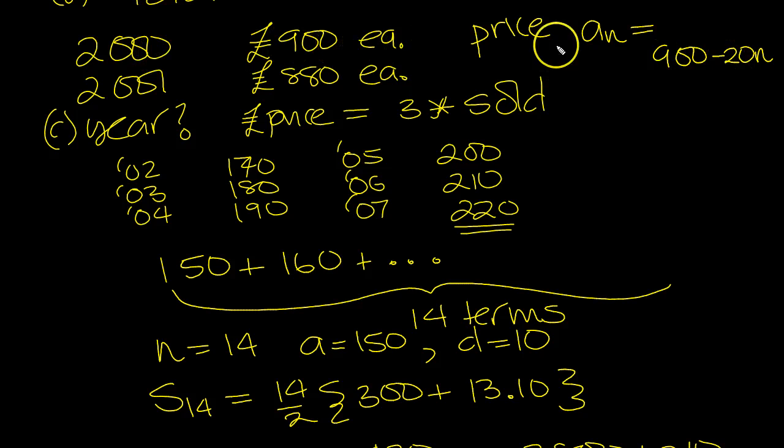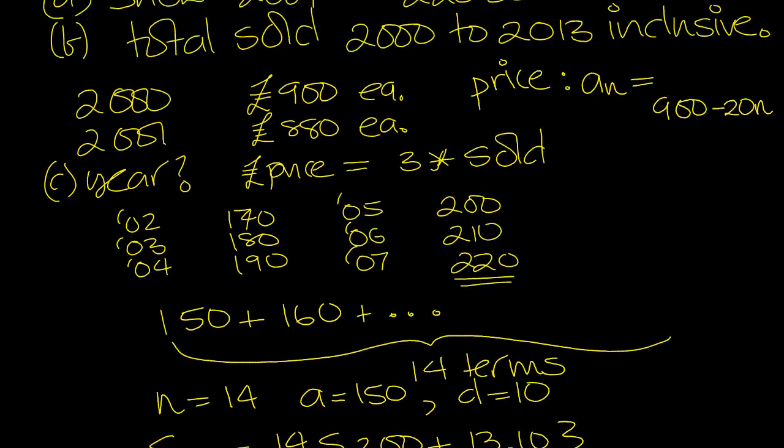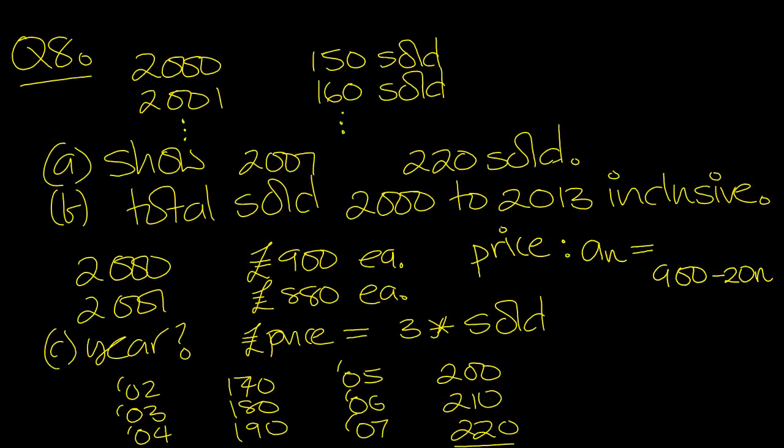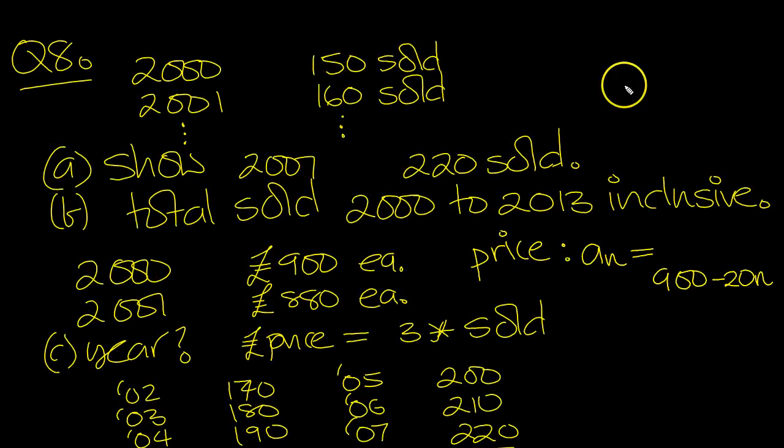And then the amount sold would be 150 plus 10N, and that's the amount sold.